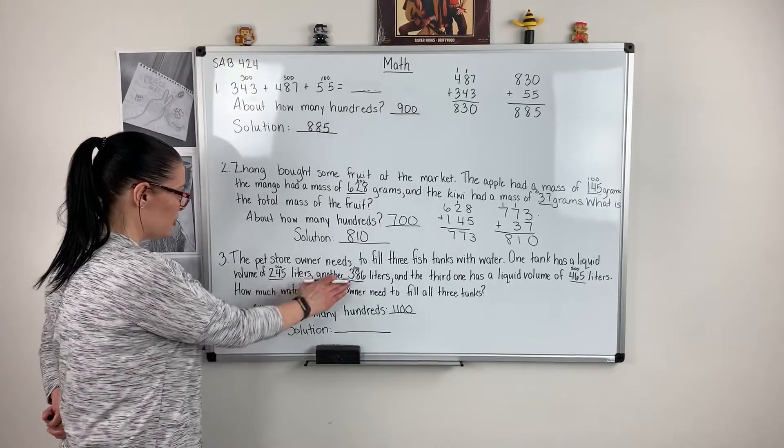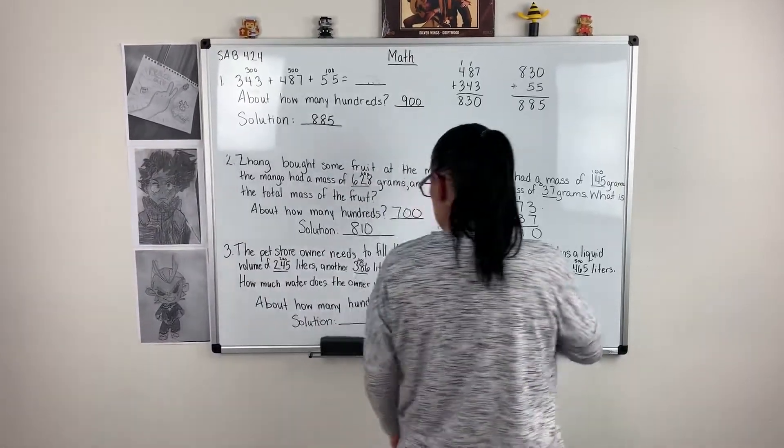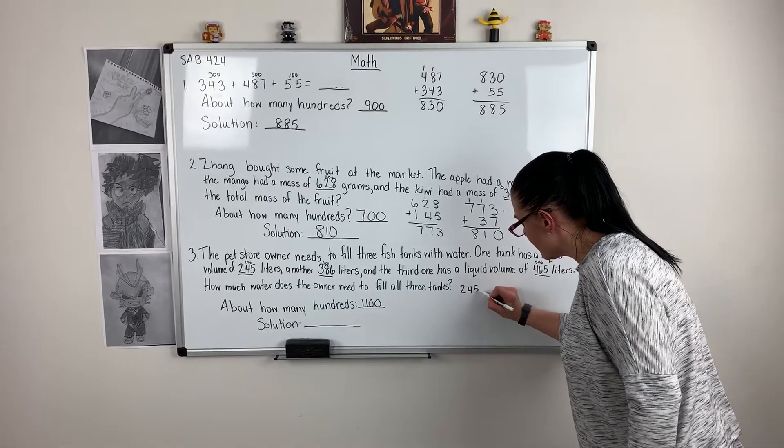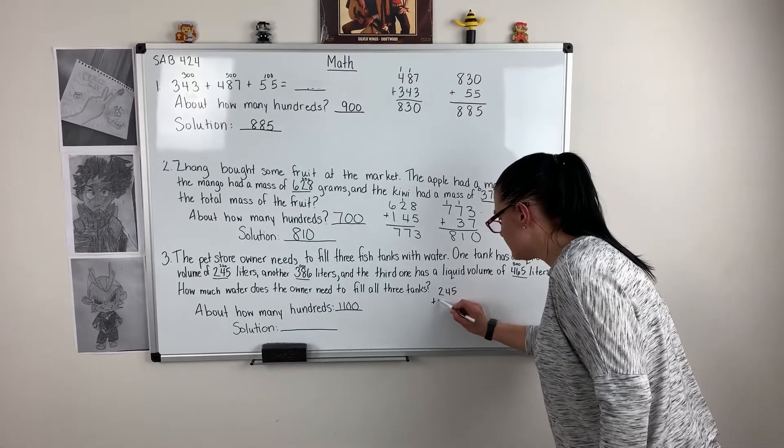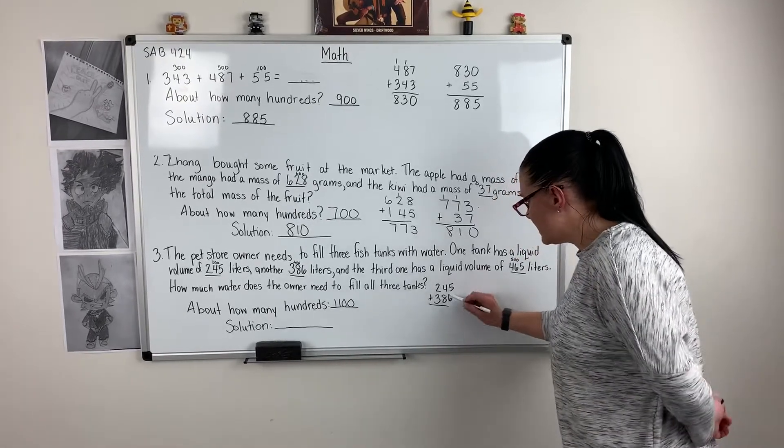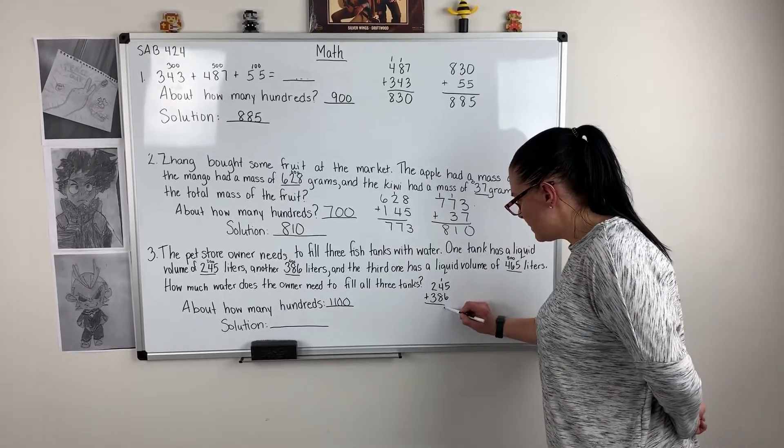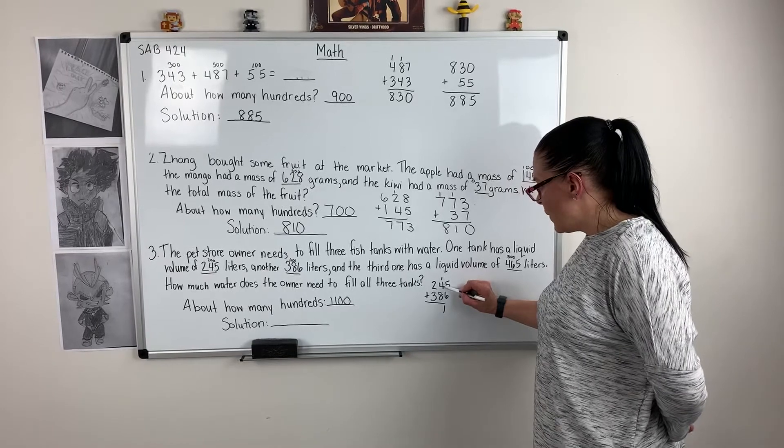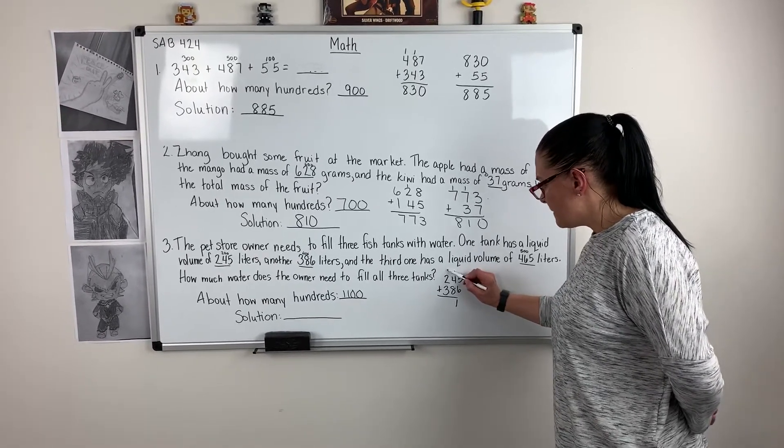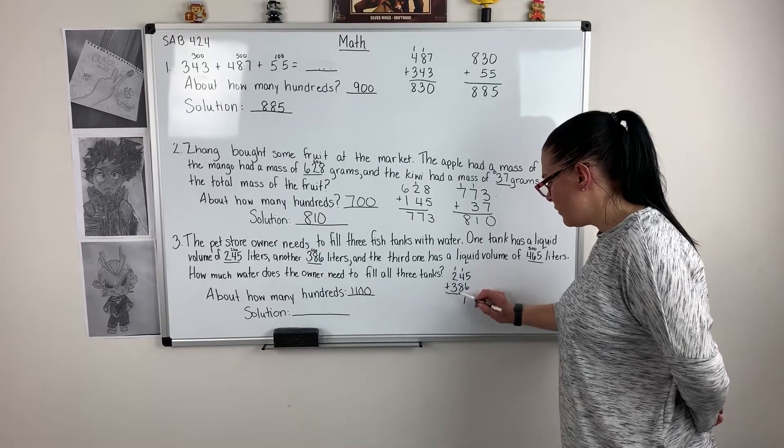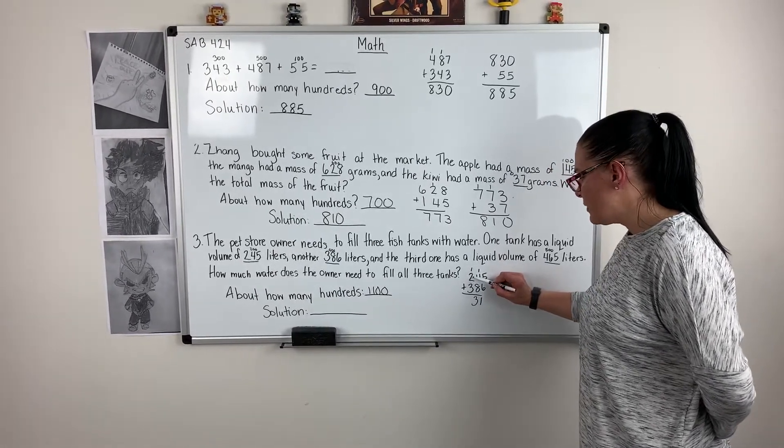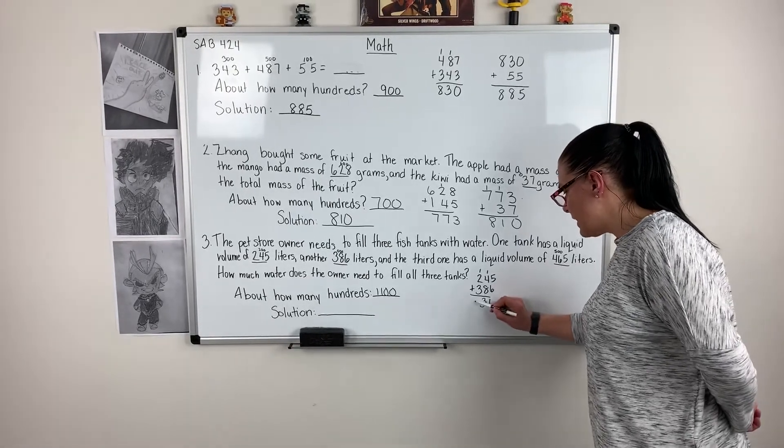I'm going to add my first two numbers. 245 plus 386. 5 plus 6 is 11. I need to put my 10 in my tens place, 1 left over. 1 plus 4 is 5. 5 plus 8 is 13. I need to move my 1 to my hundreds place, 3 tens left over. 1 plus 2 is 3. 3 plus 3 is 6.